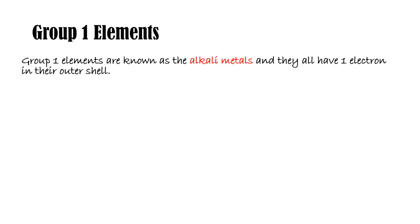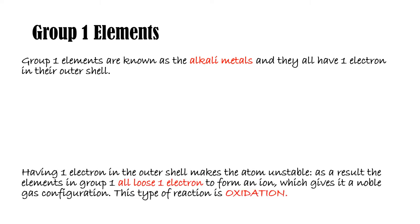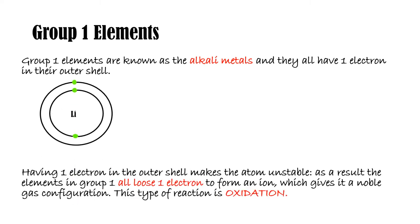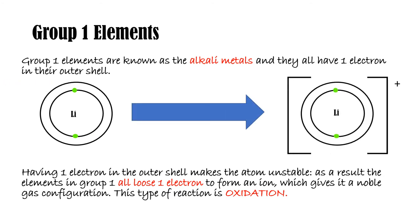Group 1 elements are known as the alkali metals, and they all have one electron in their outer shell. Group 1 elements undergo oxidation, where an electron — the one in the outer shell — is lost and an ion is formed. When the ion is formed, it has a more stable electronic structure, which is like the noble gases.